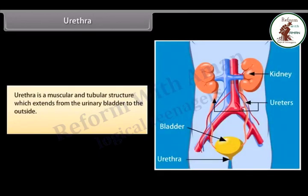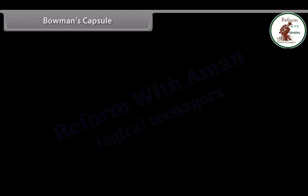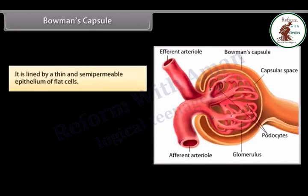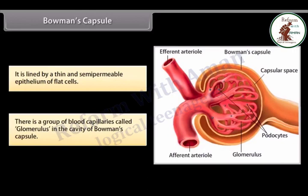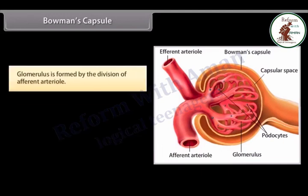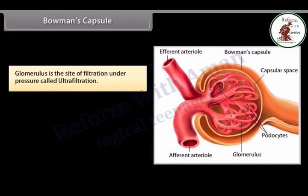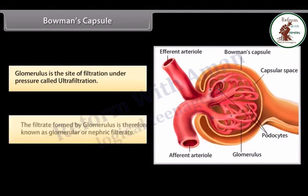The urethra is a muscular and tubular structure which extends from the urinary bladder to the outside and carries urine out of the body. Bowman's capsule is a double-walled cup present in the renal cortex, lined by a thin and semi-permeable epithelium of flat cells. There is a group of blood capillaries called the glomerulus in the cavity of Bowman's capsule, formed by the division of the afferent arteriole. Bowman's capsule and glomerulus together are called the Malpighian body or renal corpuscle. The glomerulus is the site of filtration under pressure, called ultrafiltration, and the filtrate formed is known as glomerular or nephric filtrate.